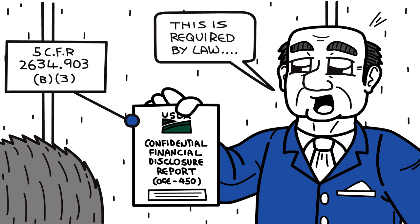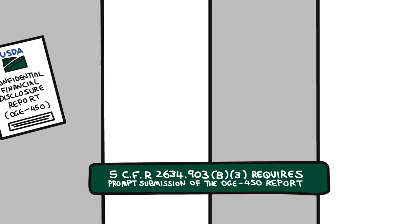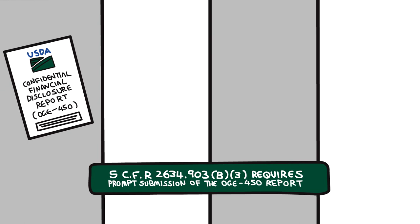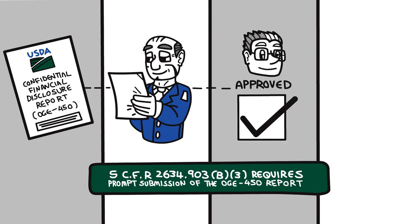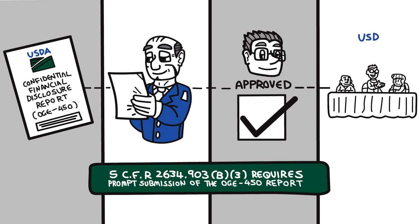This legal requirement means that you'll need to submit your completed OGE 450 report very early in the process. This will give agency ethics officials the opportunity to review your report to ensure that you don't have a financial interest that might pose a conflict with matters that'll be discussed as part of the committee's work.